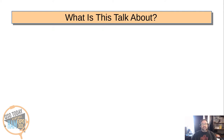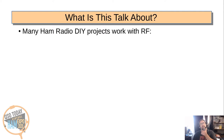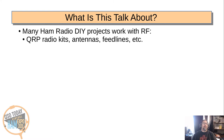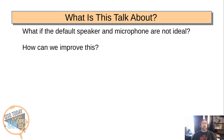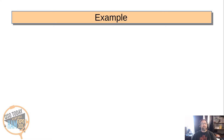So what's this talk about? A lot of ham radio DIY projects deal with RF — QRP radio kits, antennas, feed line, that kind of thing. But fewer of them talk about audio, and they assume we're just using the default speaker and microphone on the radio and aren't doing anything exciting. But what if the default speaker and microphone aren't ideal for your particular use case? How can we improve this?